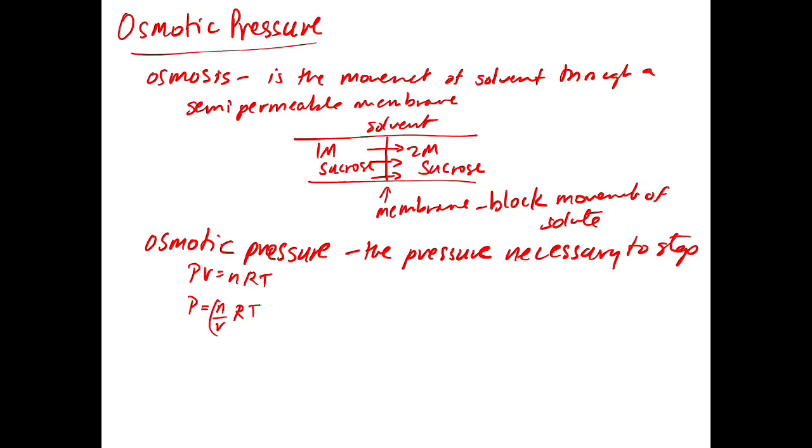And now R in this case is going to be our regular gas law R, so 0.0821 liters atmospheres per mole Kelvin, because what we're going to be plugging in here is we're going to be plugging in a temperature in Kelvin. And we're going to be trying to get a concentration out in moles per liter. So we need to use that value of R. So this equation, like the other equations, pi is equal to MRT.